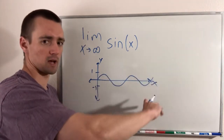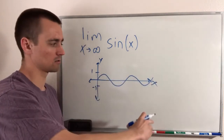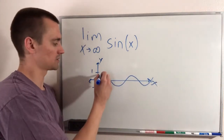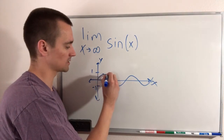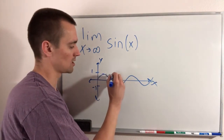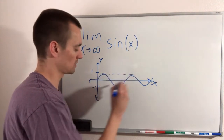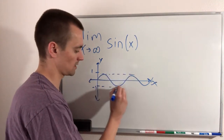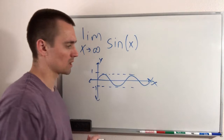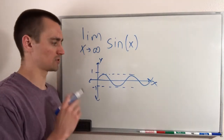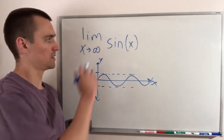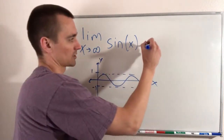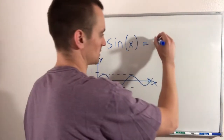It's just going to indefinitely oscillate between one and negative one. So as a result, this limit actually does not exist.